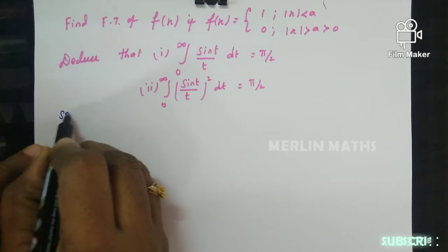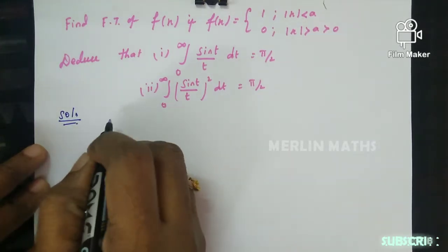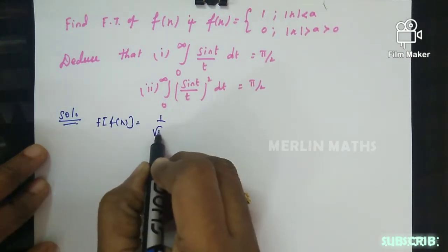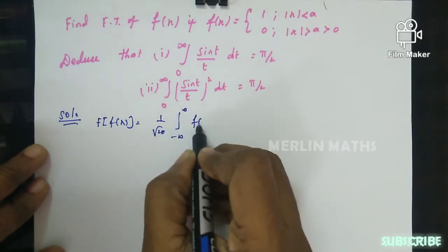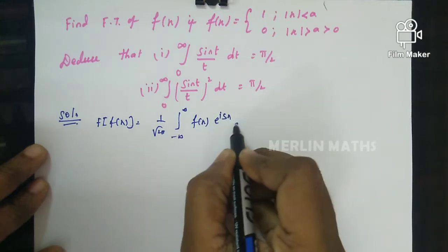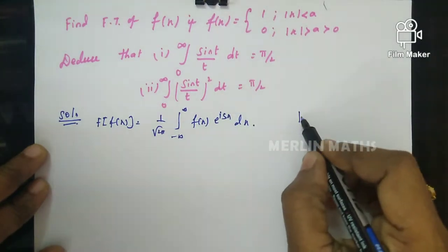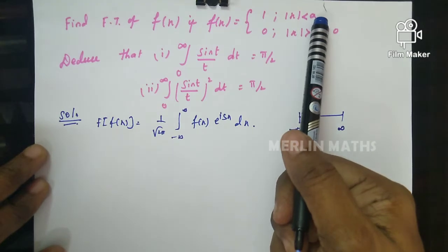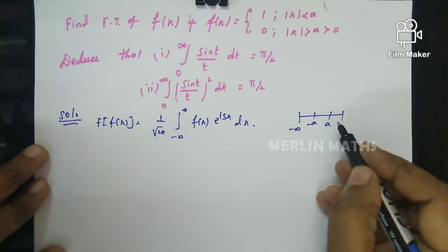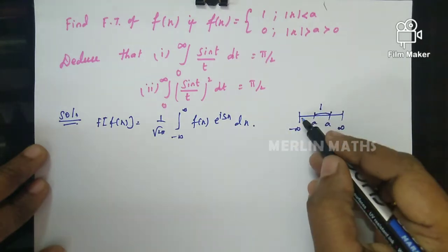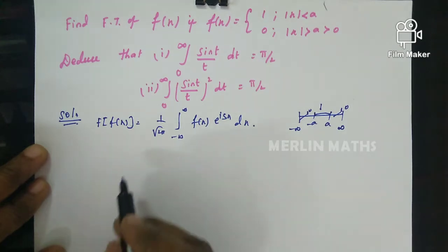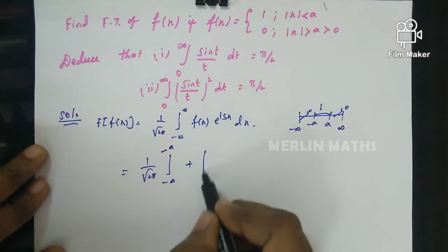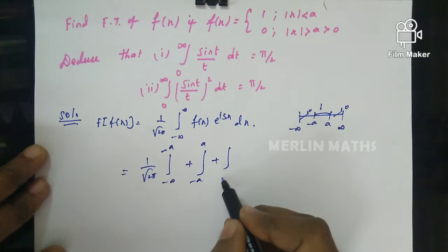Now look at the solution. We know the definition of Fourier transform: F(s) = (1/√(2π)) ∫₋∞^∞ f(x) e^(isx) dx. The definition integral is from minus infinity to plus infinity. In the question, |x| < a means from -a to +a the function takes the value 1, and in the remaining places it takes the value 0. So the integral can be split into three intervals: minus infinity to -a, then -a to +a, then +a to infinity.